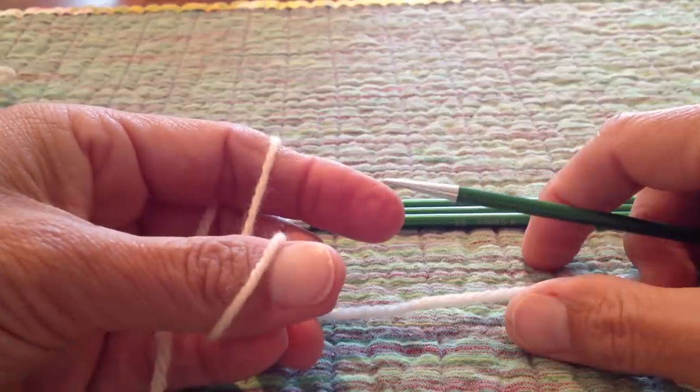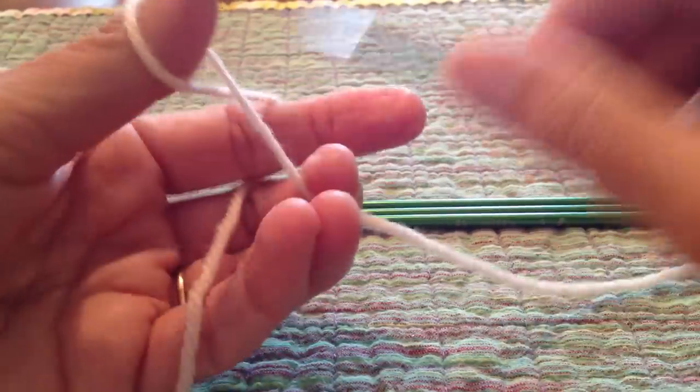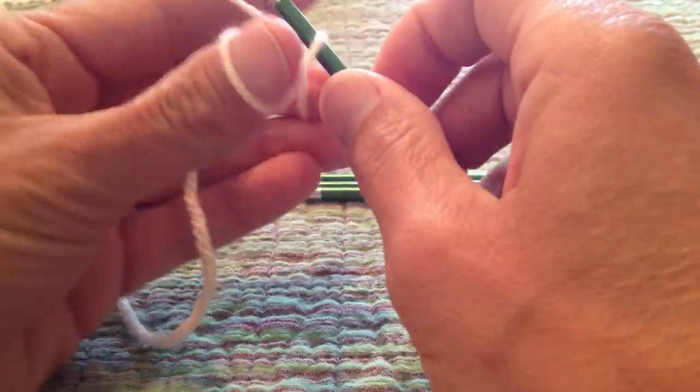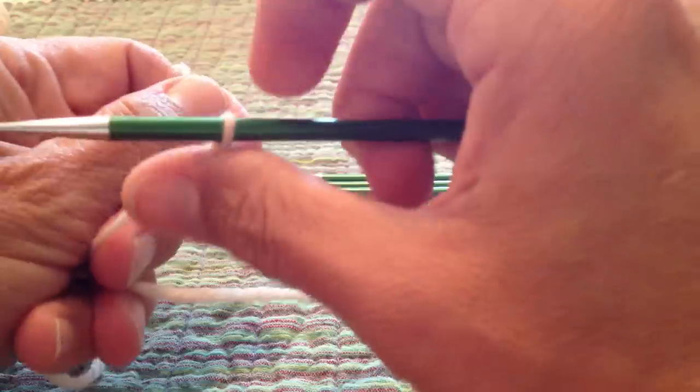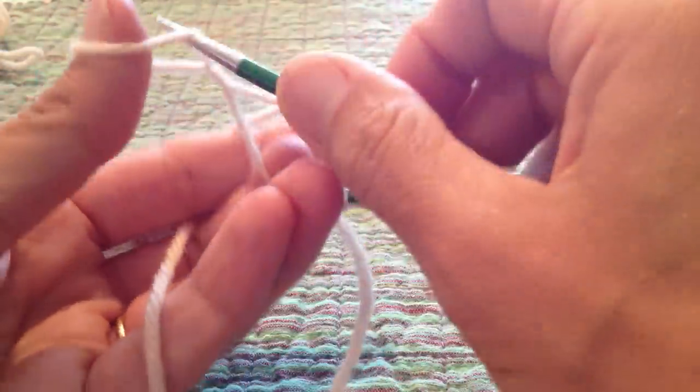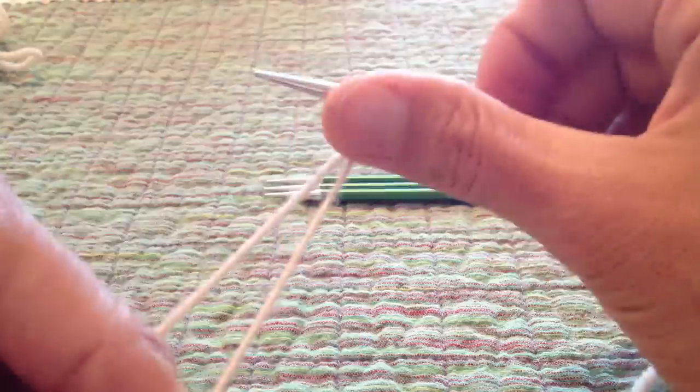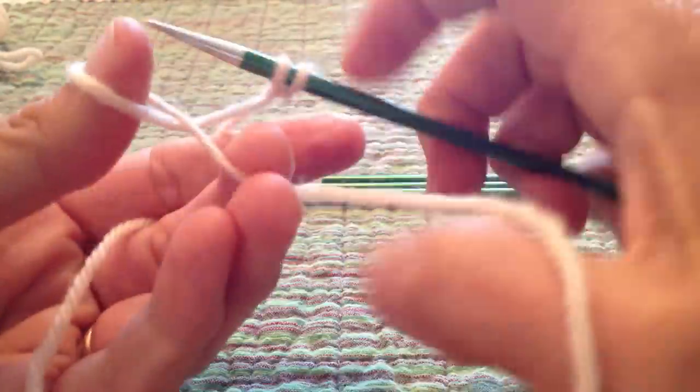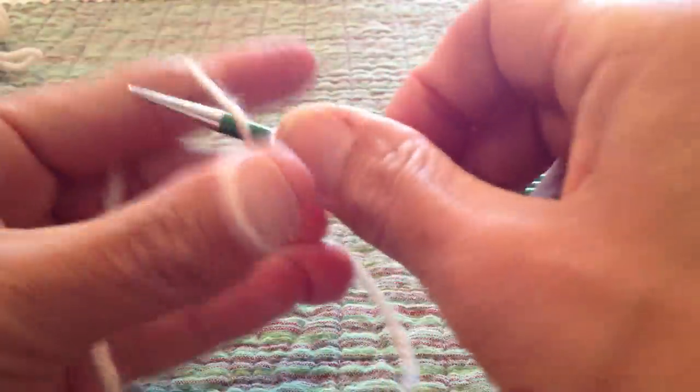A lot of times in my toy patterns, I have people cast on nine stitches and join them to work in the round. In my classes, I've noticed that a lot of people have trouble with those first couple rounds, so I want to show you how I do it.